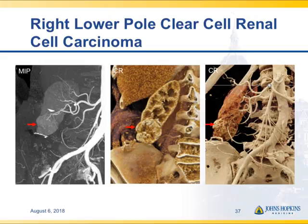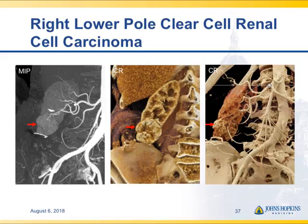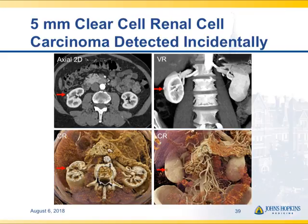Renal cell carcinoma — you can see the textural change in the mass in the lower pole of the kidney. One of the things we're looking at is whether you can distinguish chromophobes from clear cells and papillaries based on texture differences. About 25% of patients who go to surgery for a renal mass have a benign process, and perhaps this will be one way to make that information better. Here with obvious neovascularity, preoperative planning nicely shows the vessels feeding the neovascularity and its extent. We also picked up a 5-millimeter renal lesion — really seen as a dimple on the renal surface on cinematic rendering — which was a small renal cell carcinoma, very easy to walk by but nicely shown.